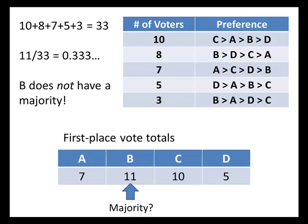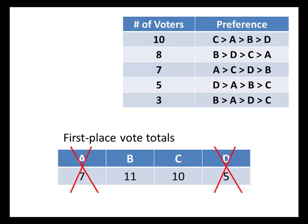Since B does not have a majority, we have to start eliminating candidates. Using the contingent method, B and C are the top two, so we eliminate A and D. Now we have a runoff election that's just between B and C — A and D are not candidates in this runoff.